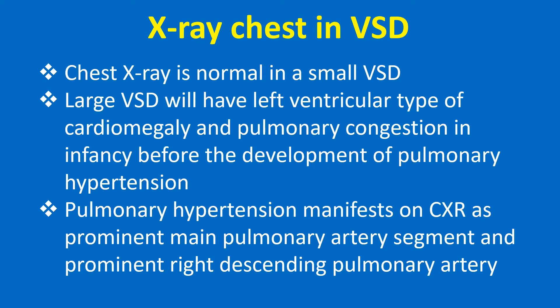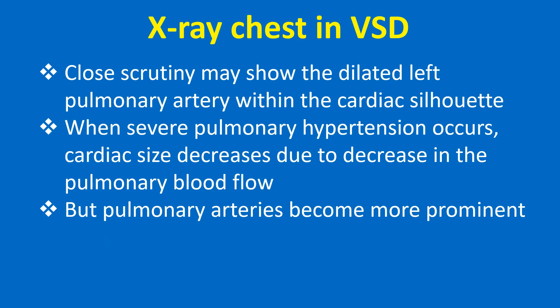Chest X-ray is normal in a small VSD. A large VSD will have left ventricular type of cardiomegaly and pulmonary congestion in infancy before the development of pulmonary hypertension. Pulmonary hypertension manifests on CXR as prominent main pulmonary artery segment and prominent right descending pulmonary artery. Close scrutiny may show the dilated left pulmonary artery within the cardiac silhouette. When severe pulmonary hypertension occurs, cardiac size decreases due to decrease in pulmonary blood flow, but pulmonary arteries become more prominent.